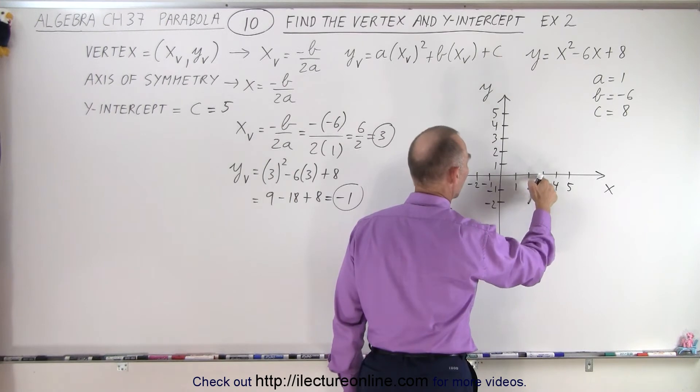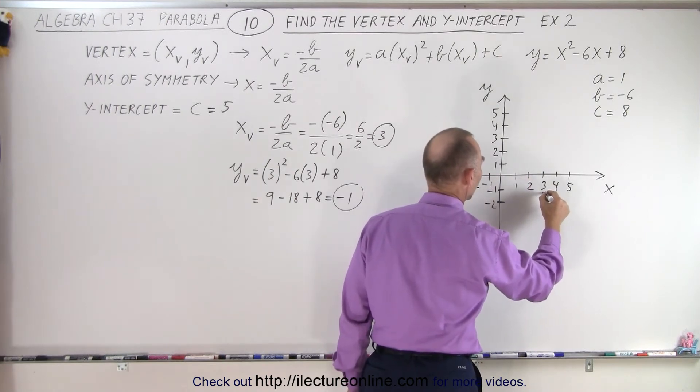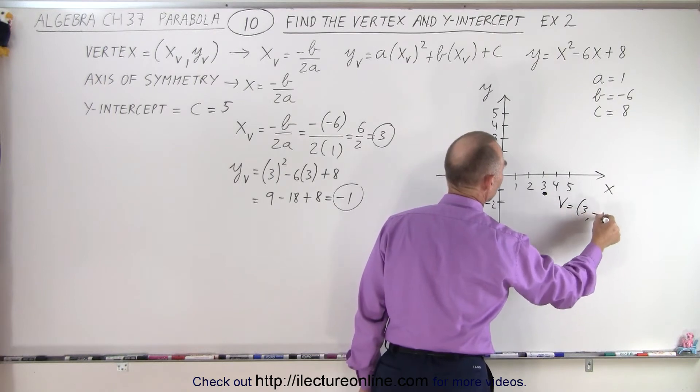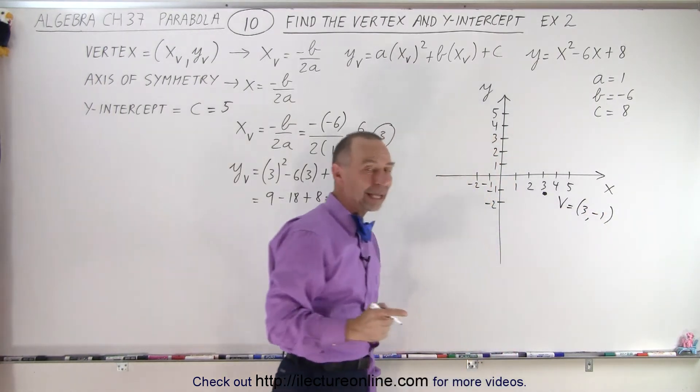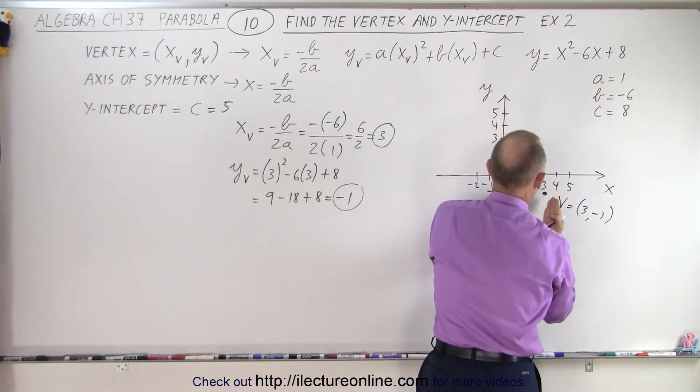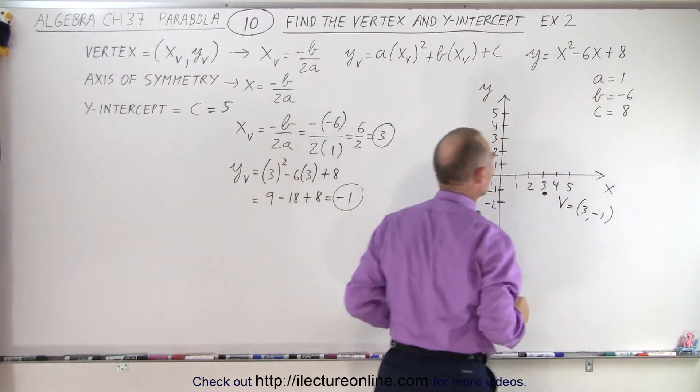So x equals 3, y equals negative 1. That's the point right here. That's the vertex, which is equal to 3 and negative 1. Now we take a look at the value for a, and we realize that a is positive, so we know that the parabola will open upward.